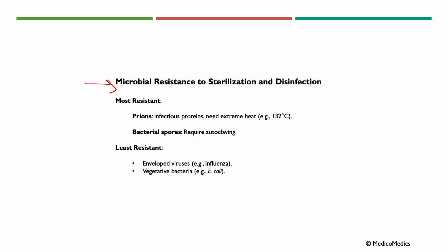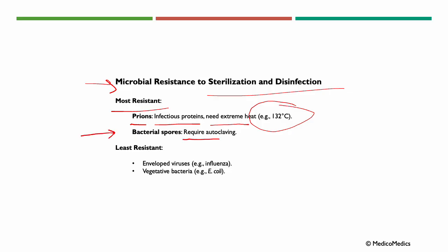Regarding microbial resistance to sterilization and disinfection: the most resistant microbes include prions, which are infectious proteins requiring extreme heat — around 132 degrees Celsius — to destroy. Bacterial spores require autoclaving, which combines high temperature and high pressure. The least resistant include enveloped viruses like influenza, and vegetative bacteria like E. coli.